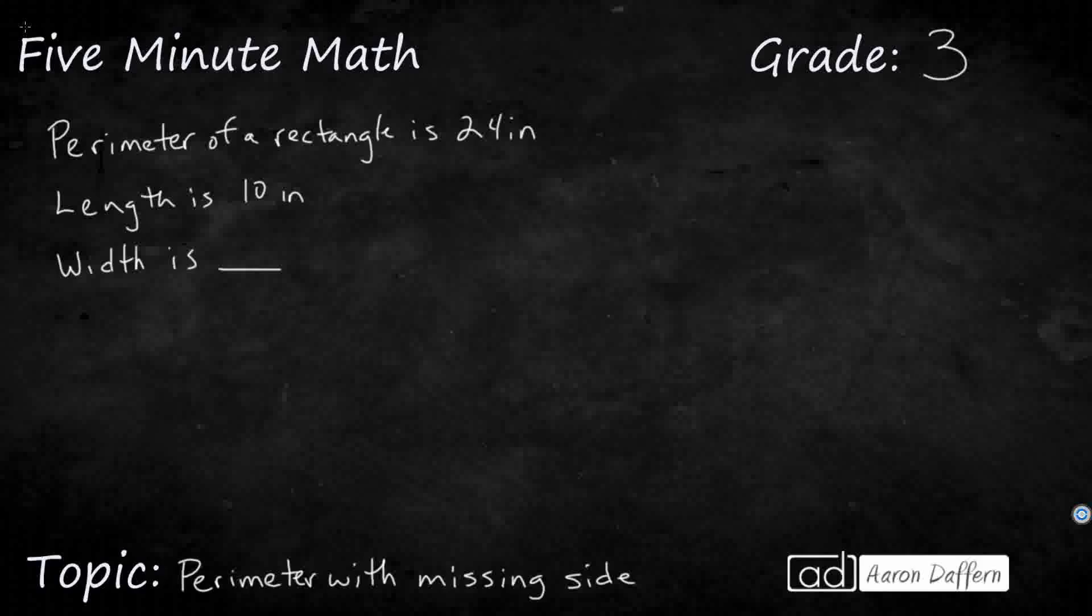So here's a sample problem. We are given the perimeter of a rectangle, so let's draw our rectangle here, and we are given one side length. And so let's say the length is 10, and we'll just call this 10 right here. So 10 inches.